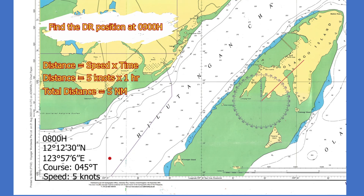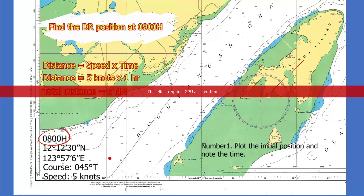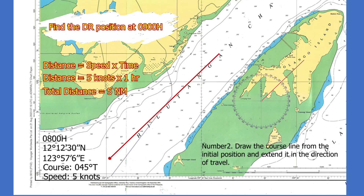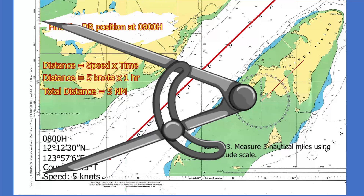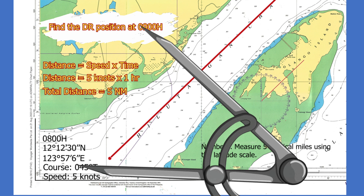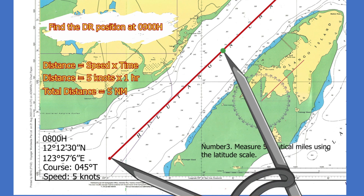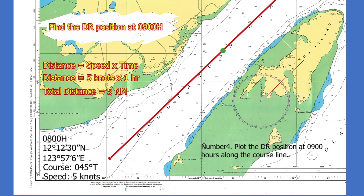To plot the DR position, the following steps should be followed. Number one: plot the initial position and note the time. Number two: draw the course line from the initial position and extend it in the direction of travel. Number three: measure 5 nautical miles using the latitude scale. Number four: plot the DR position at 0900 hours along the course line. And that's it — you now have your DR position at 0900 hours.